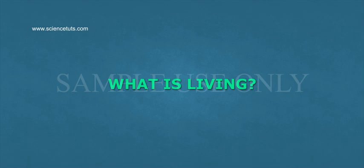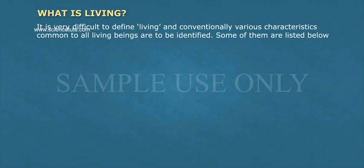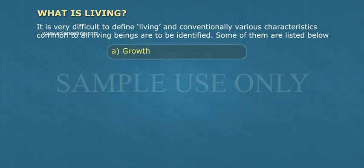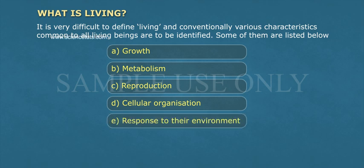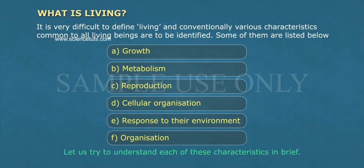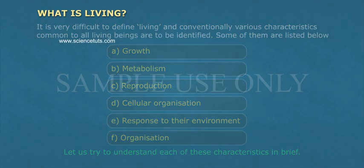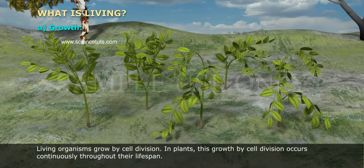What is living? It is very difficult to define living, and conventionally various characteristics common to all living beings are to be identified. Some of them are listed below: growth, metabolism, reproduction, cellular organization, response to their environment, and organization. Let us try to understand each of these characteristics in brief.